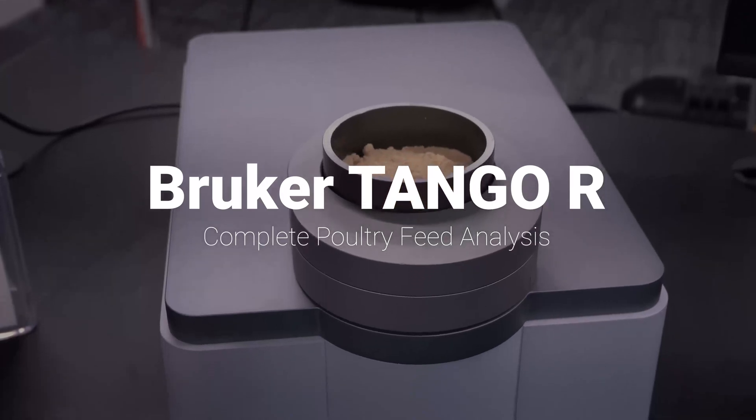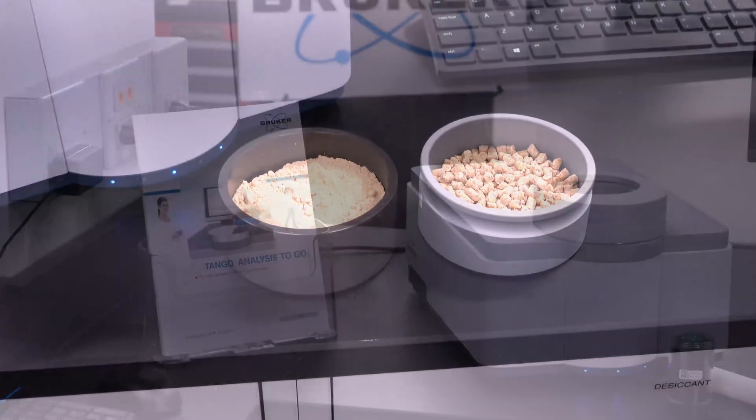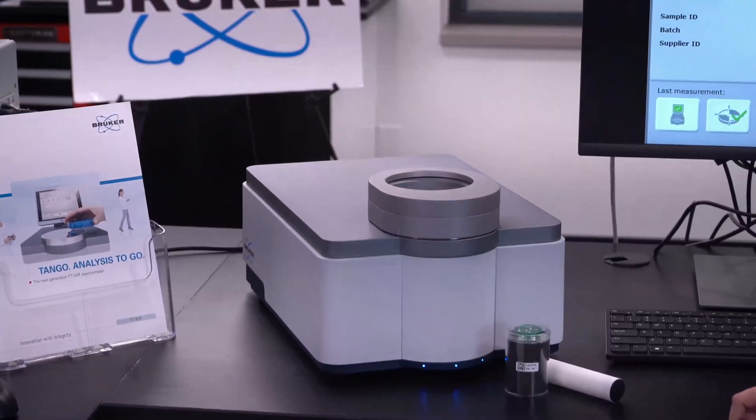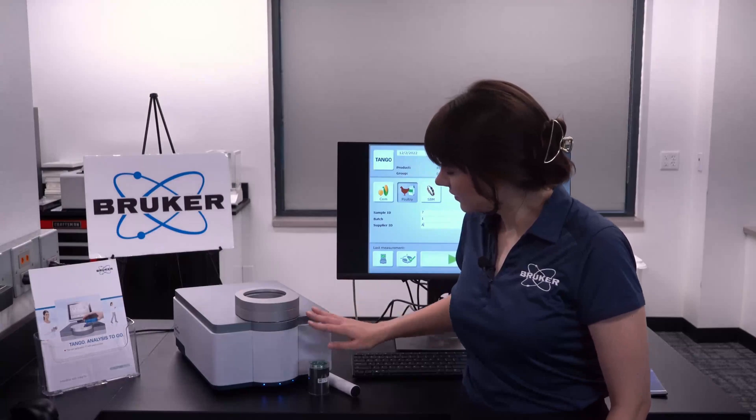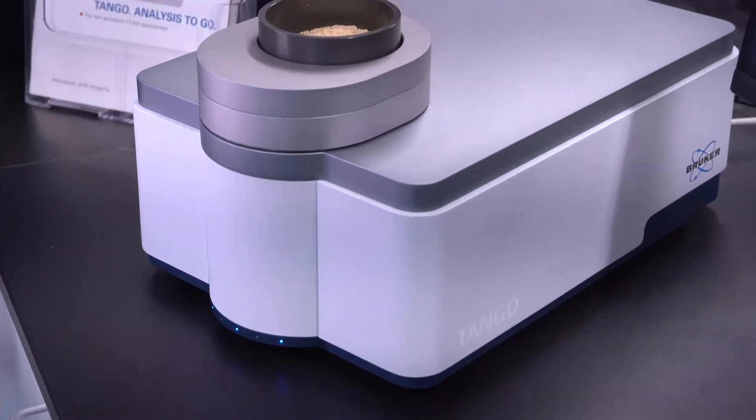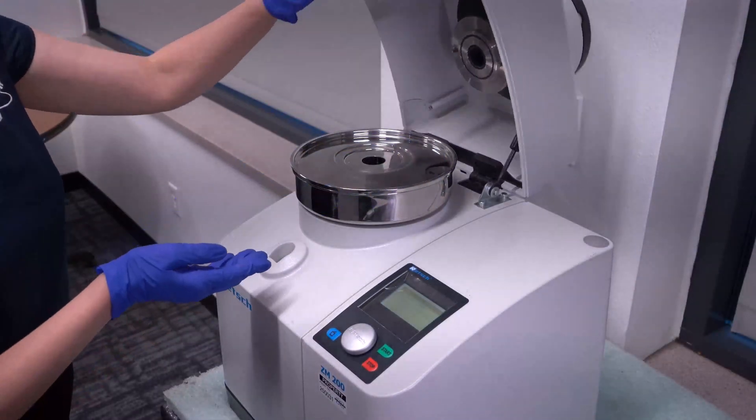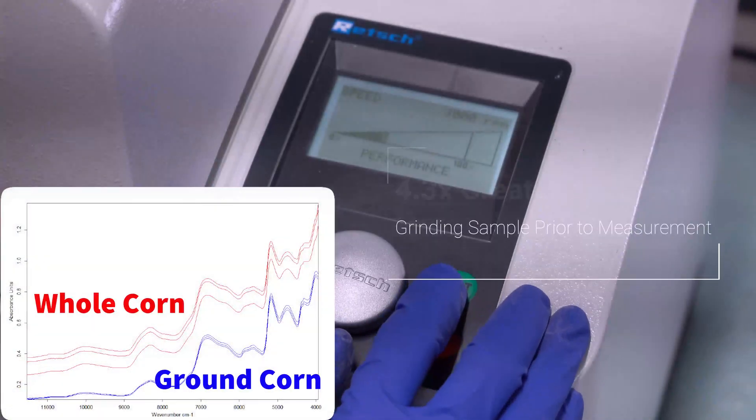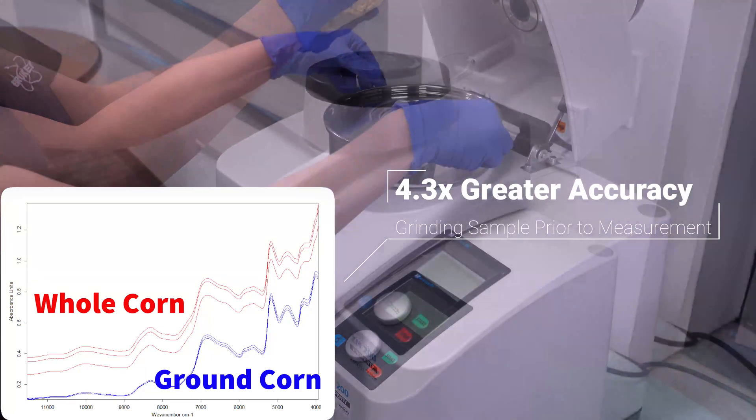Today we're in our Madison lab to address the ever-common question, to grind or not to grind? While the Tango was designed with the agricultural industries in mind, keying in on robustness, a small benchtop footprint, limited consumables and ease of use, accuracy and precision are still of the utmost importance. And we found that grinding samples to uniform particle size will increase both the accuracy of the results and the precision of replicate NIR measurements.